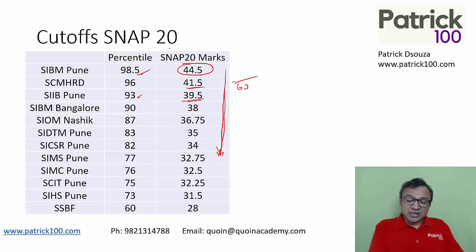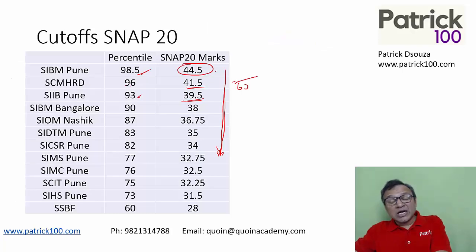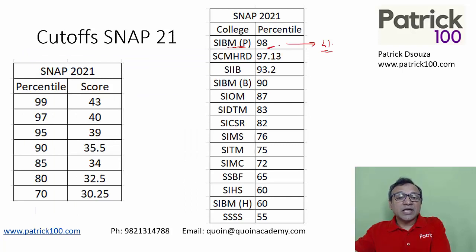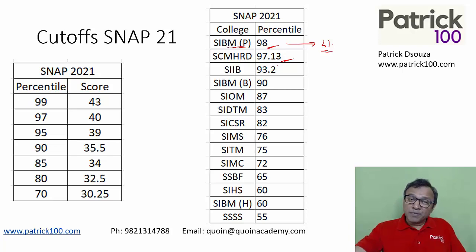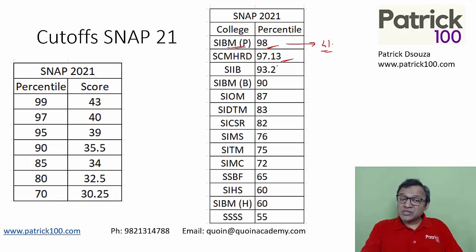That's not necessarily the same this year. Looking at SNAP 2021, the score required for SIBM Pune was lesser — around 41 to 41.3 marks — whereas in 2020 it was 44.5. The cutoff can change based on the difficulty level of the paper. The percentile also changed: SIBM went from 98.5 to 98, and SMHRD increased to 97.13. You can safely expect the SIBM Pune cutoff to go above 40, unless the paper is really tough.